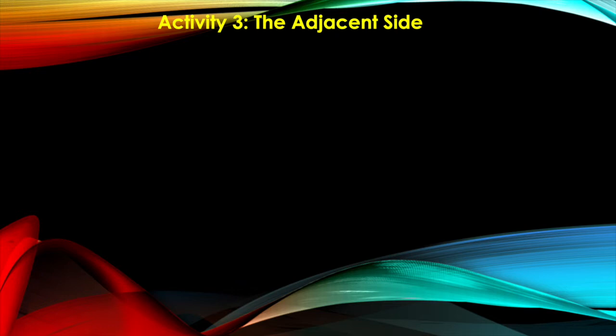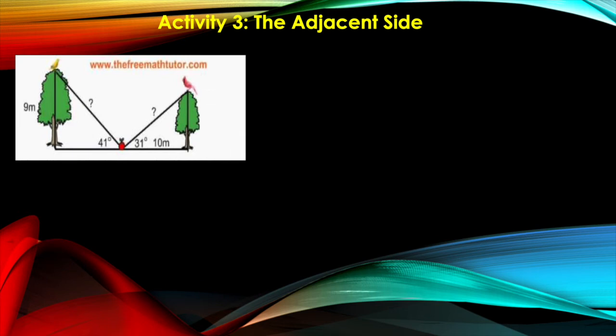Activity three of module six is calculating the adjacent side. Let us look at the diagram here that we used in activity two. Again, we have two trees, one is taller than the other. We have an apple on the ground. The reference angles are on the ground, 41 degrees and 31 degrees.